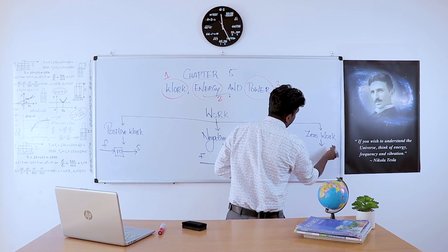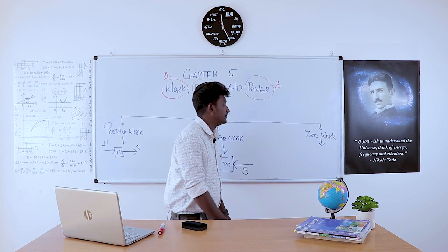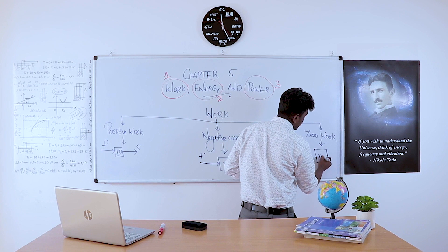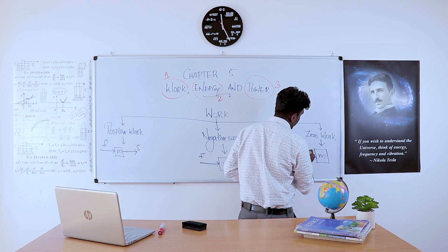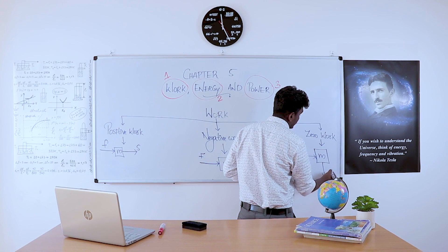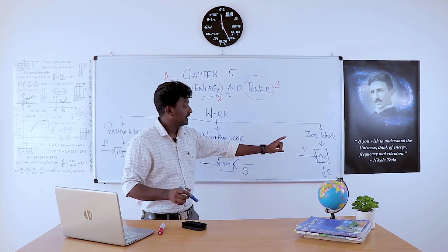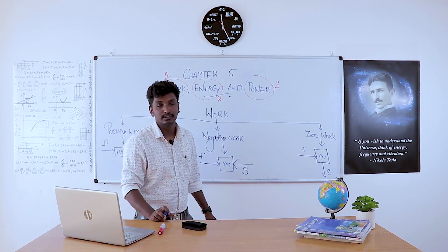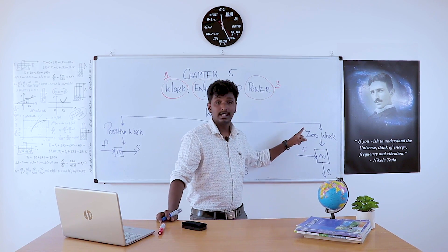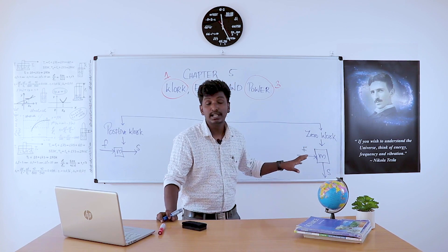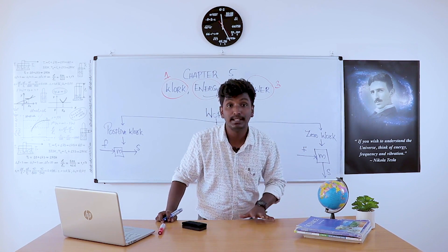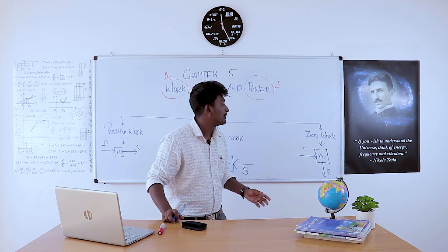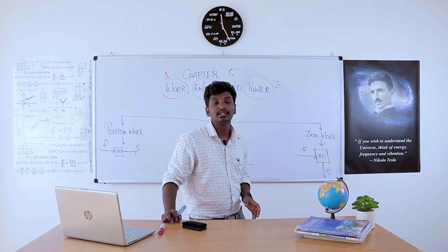Moving to the third classification: zero work. In the same way, we consider an object of mass m with a force F applied. If the object moves at a right angle — that is, perpendicular — to the direction of the applied force, then the work is said to be zero work.